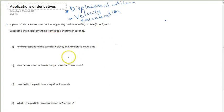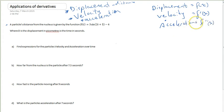The first question says find expressions for the particle's velocity and acceleration over time. If you have a displacement function, the velocity function is the derivative of that. So if displacement equals f(x), then velocity will equal f'(x). Velocity is the derivative of displacement. And similarly, acceleration is the derivative of velocity, so the second derivative of displacement.